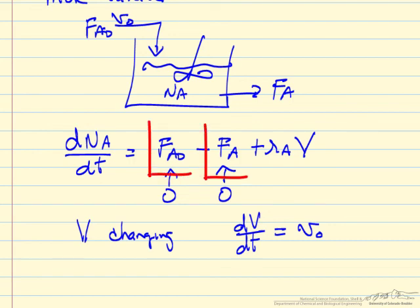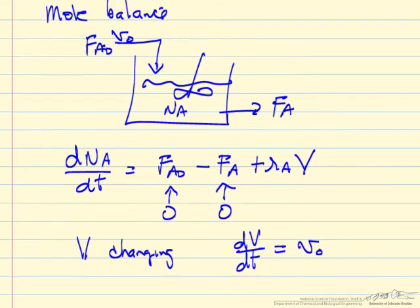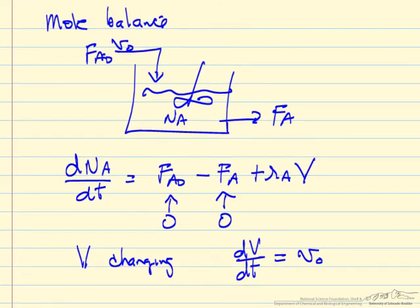And so the semi-batch reactor equation in this form looks the same as the startup of a CSTR. The difference is we may have both these flow rates for a semi-batch, but more likely we have just one or the other. So we have a number of reasons to use a semi-batch reactor. And we see the mass balance is fairly straightforward.